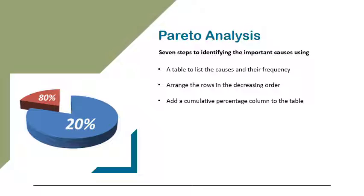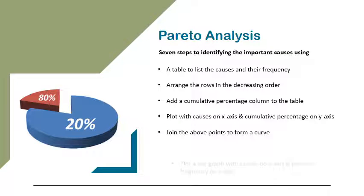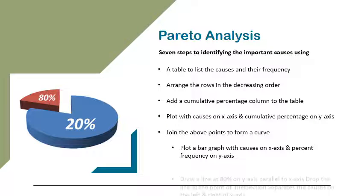Step three: add a cumulative percentage column to the table. Step four: plot with causes on the x-axis and cumulative percentage on the y-axis. Step five: join the above points to form a curve. Step six: plot on the same graph a bar graph with causes on the x-axis and percent frequency on the y-axis.